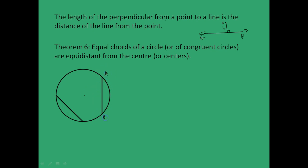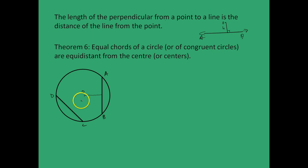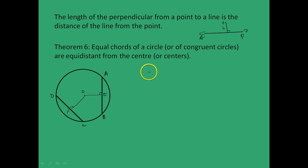Let us say we have chords AB and CD and a center O. It basically means that if AB is equal to CD, we have to prove that the perpendicular distances of O from AB and CD are equal. Let us name the foot of perpendicular from O to AB as E and to CD as F. So we have to prove OE is equal to OF.